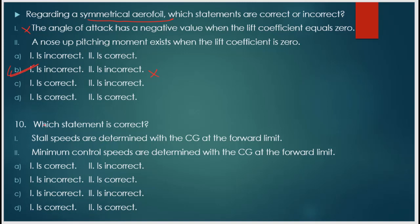Question number 10: which statement is correct — stall speeds are determined with the center of gravity at the forward limit, or minimum control speeds are determined with the center of gravity at the forward limit? Stall speed is the minimum speed at which an aeroplane can generate sufficient lift to support its weight, and the angle of attack must be less than the stalling angle of attack. The stalling velocity formula is: V_stall = √(2W·N / ρ·S·CL_max), where N is load factor.